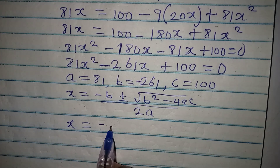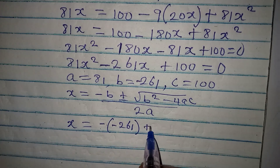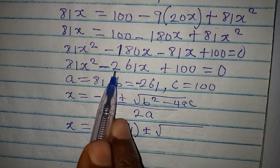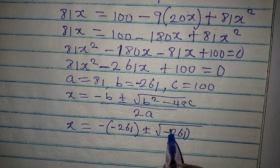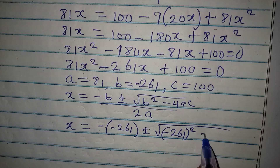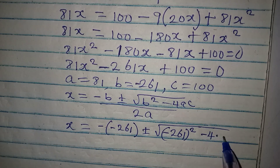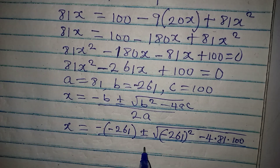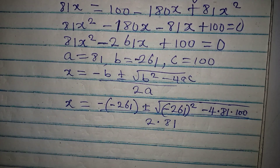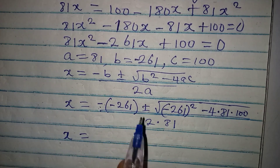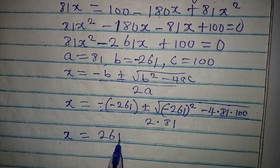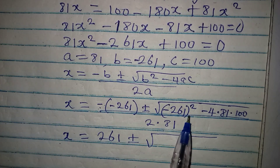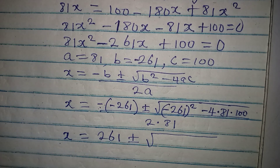Substituting, since b is negative 261, negative b gives positive 261. Under the square root we have negative 261 squared, minus 4 times 81 times 100, all over 2 times 81, which is 162. So x equals 261 plus or minus square root of that expression, over 162.